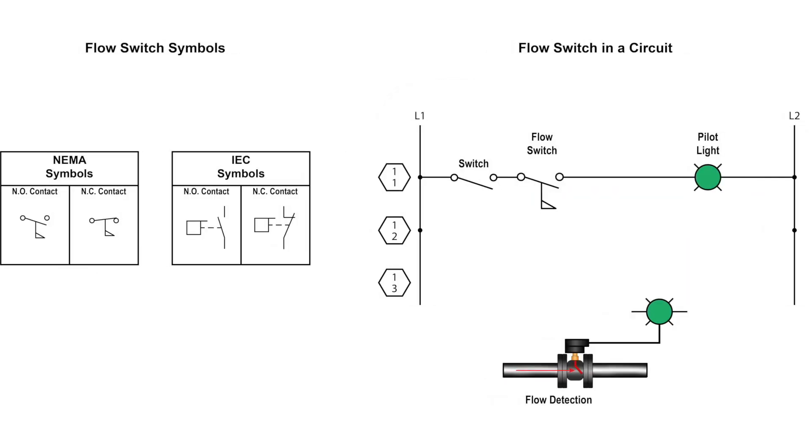The circuit provided shows the way a flow switch is drawn and operated. If the flow switch has enough fluid flow to overcome the spring tension on the paddle, then it will close the contacts and turn the pilot light on.